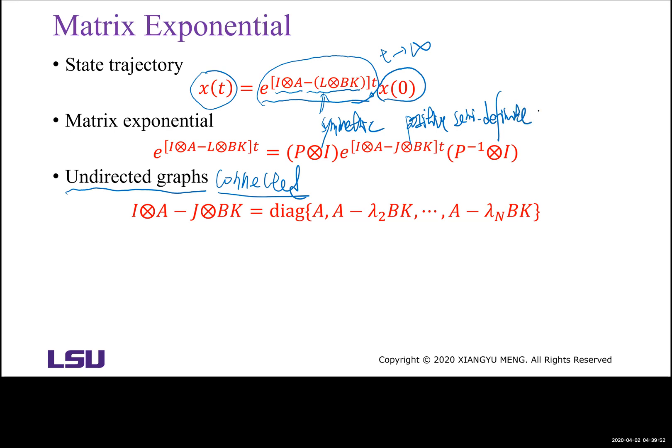Then there exists a unitarian matrix P inverse L and P to make into a diagonal form. You have zero, lambda 2, lambda 2 is the smallest positive eigenvalue until lambda n. So here n is the number of agents.